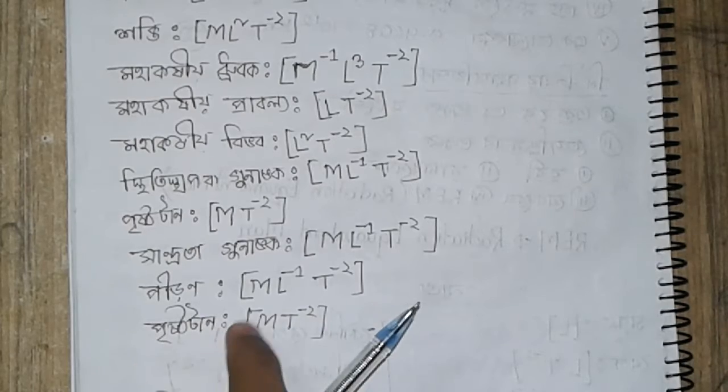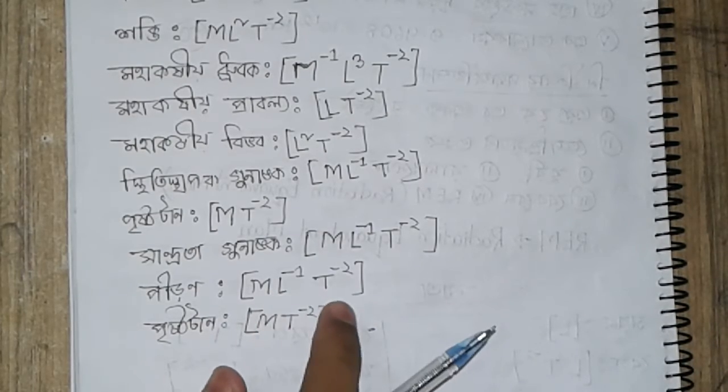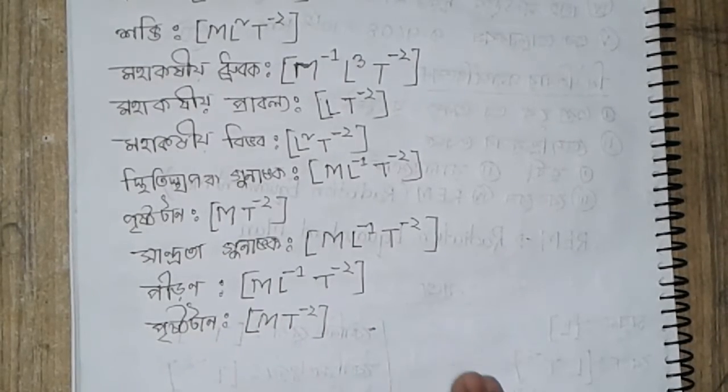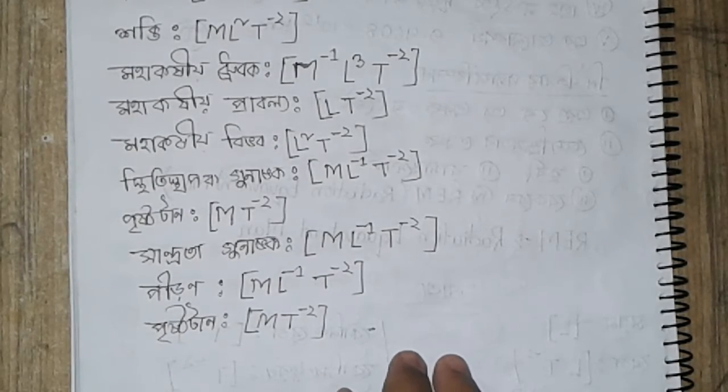The final formula gives ML inverse one T inverse two. If you want to learn more, please subscribe to the channel.